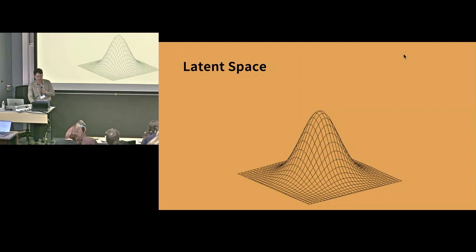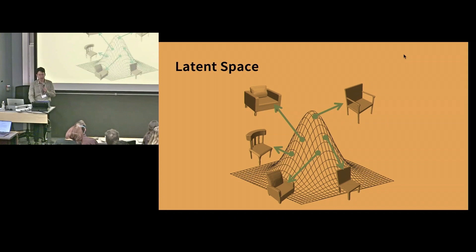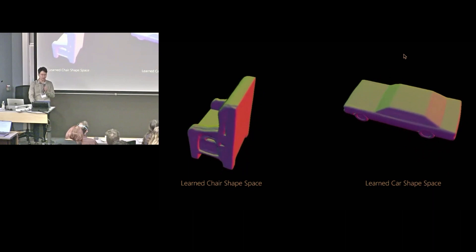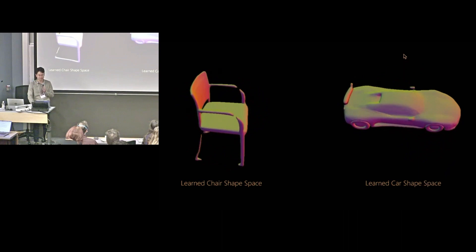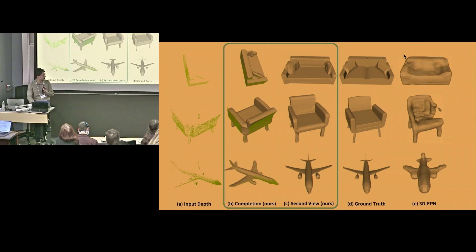Once you train a generative model using this implicit representation, you get a latent space of shapes, meaning a well-defined distribution from which you can sample shapes that look realistic with respect to your training data. To verify this, you can conduct interpolation in the latent space and see that shapes interpolate smoothly with reasonable outputs. As an application, given partial observations like depth maps, you can complete the backside of shapes that are not visible using these generative models, performing well compared to previous voxel-based representations.